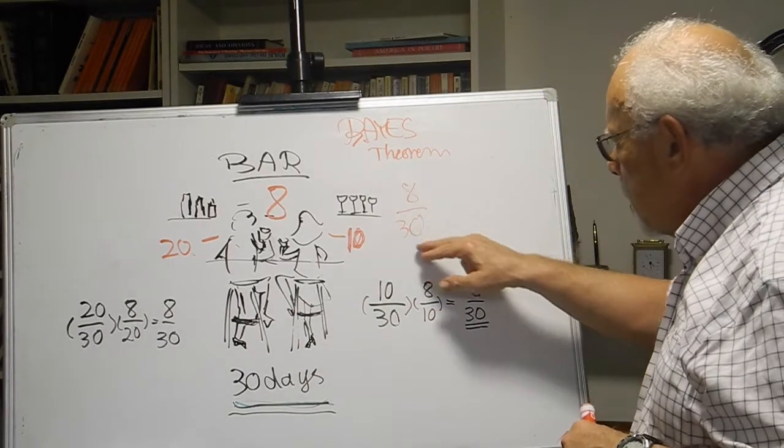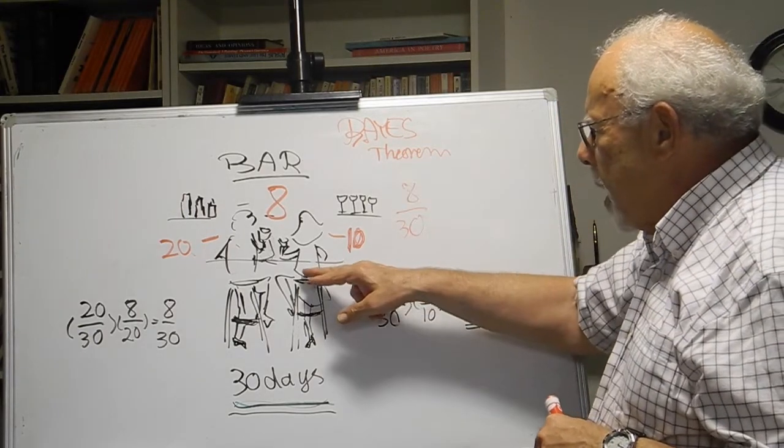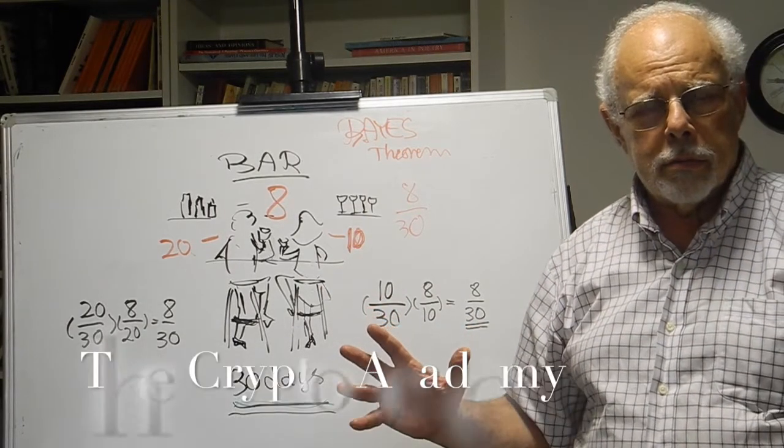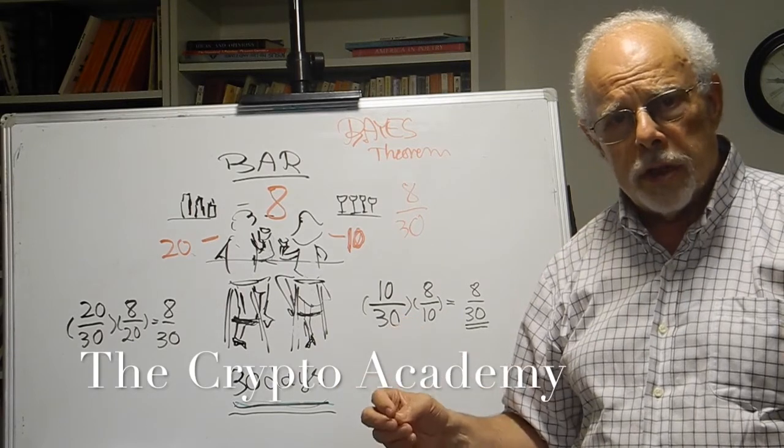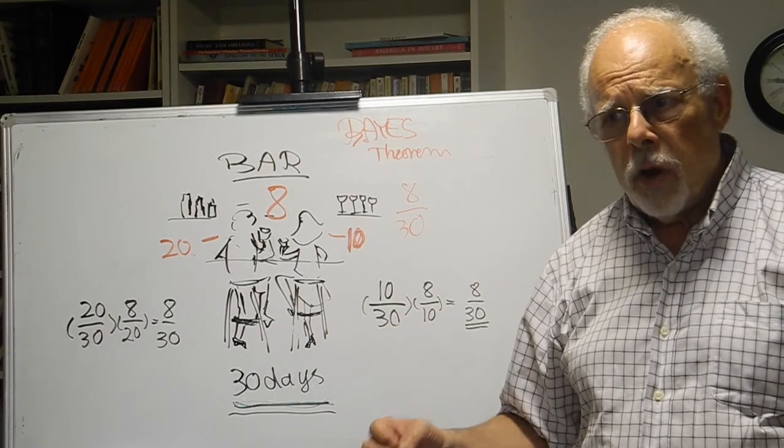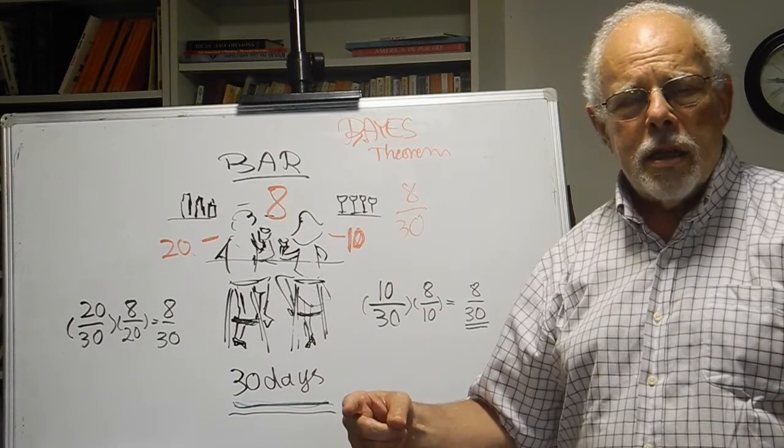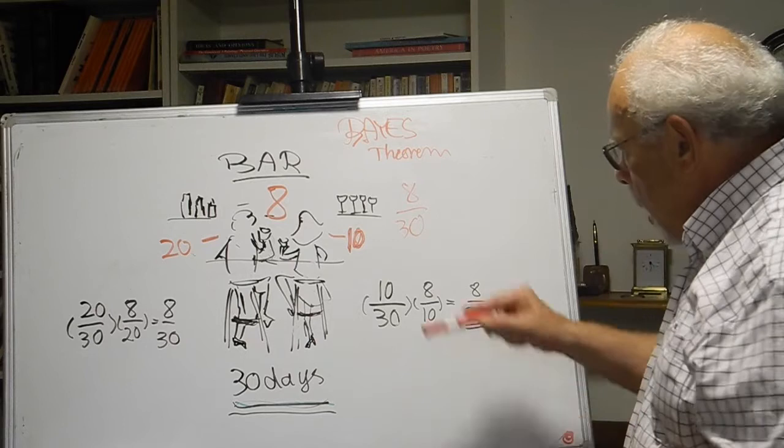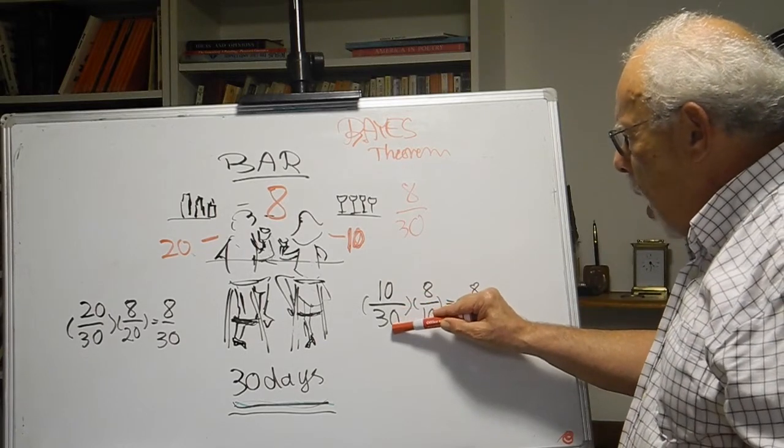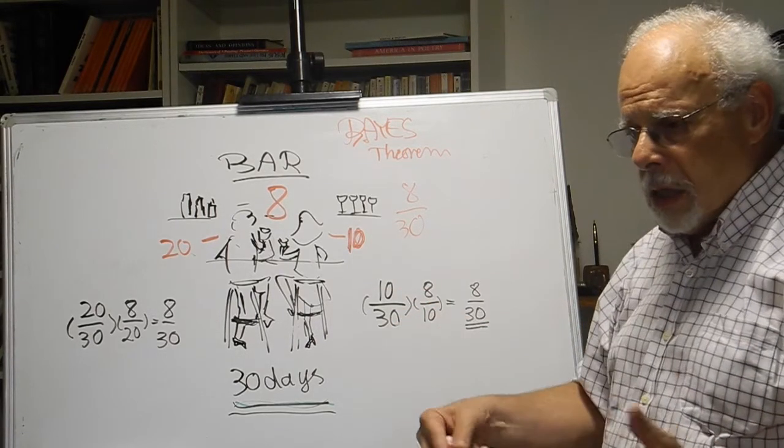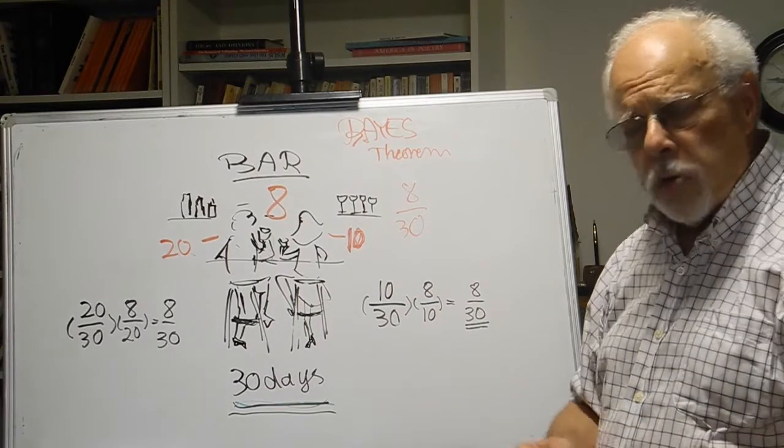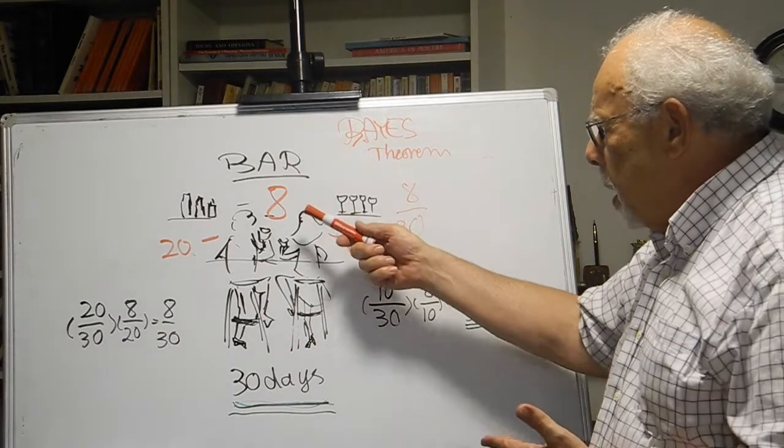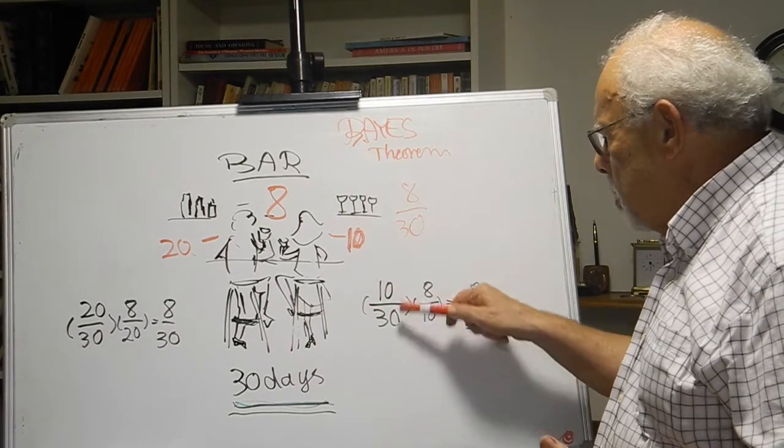We can arrive at this result by first asking ourselves what is the chance that Alice is in the bar? And once we figure this out, ask ourselves, if she's in the bar, what's the chance that Bob is also? So 10 to 30 is the chance that Alice shows up in the bar on any given night. Because we have the data. Last 30 days, she came to the bar 10 times, so it's 10 to 30.